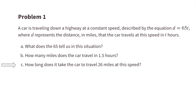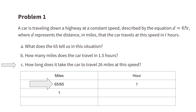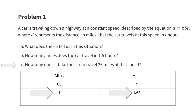Part c: how long does it take the car to travel 26 miles at this speed? The car travels 65 miles in one hour. To get from 65 miles to 1 mile, we need to divide 65 by 65. Since we divided the miles by 65, we also divide the hours by 65, giving us 1/65th of an hour.